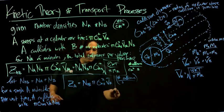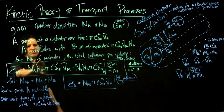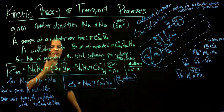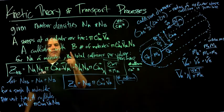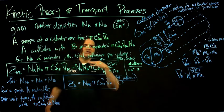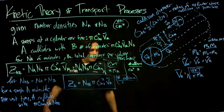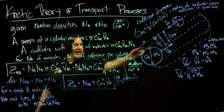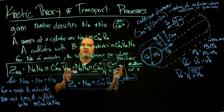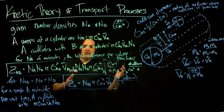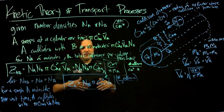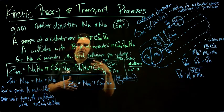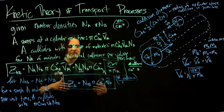Z_AB is good for chemistry—it tells us how many collisions between A and B occur, which we need for chemical reactions. Z_A focuses on the properties of one of the molecules, which could tell us a material property of this molecule. The next question is: if we know the collision rate of just A, how much distance does it travel between collisions? That's a very important property for this physical behavior of A.